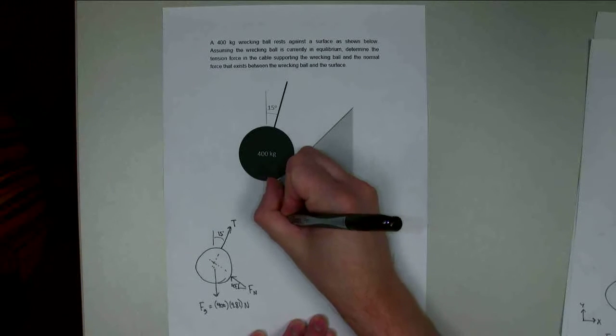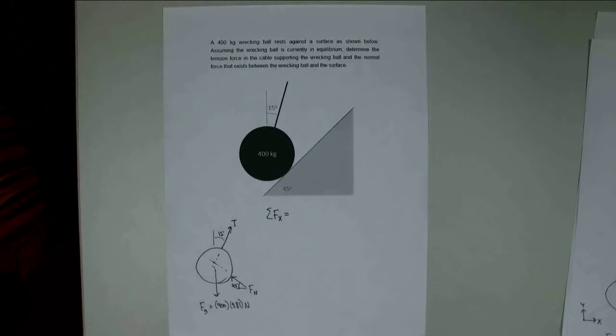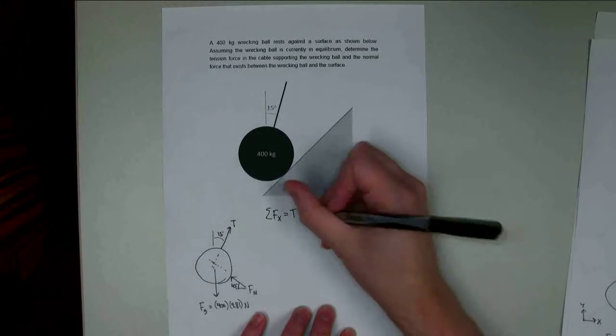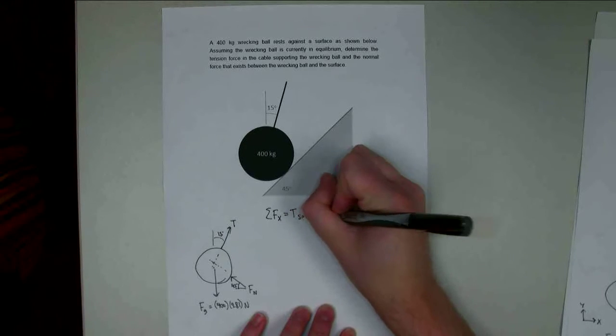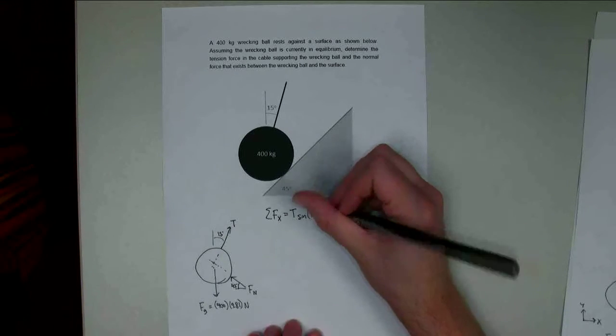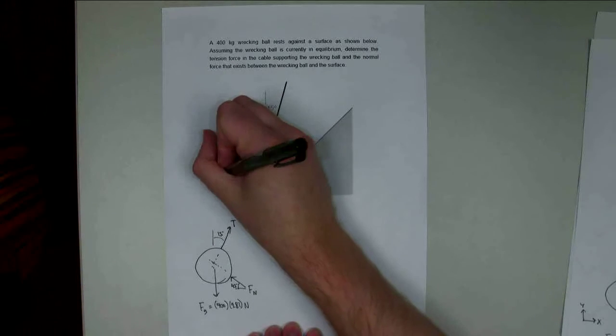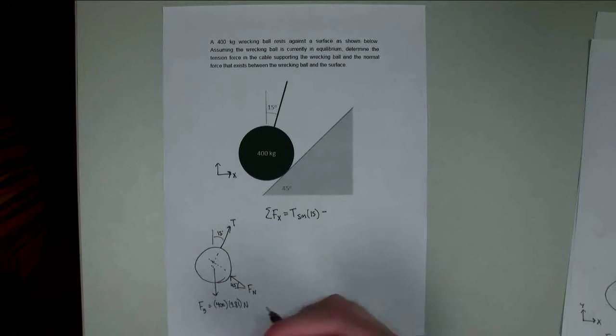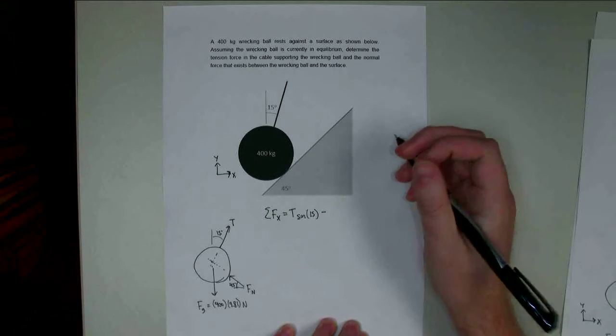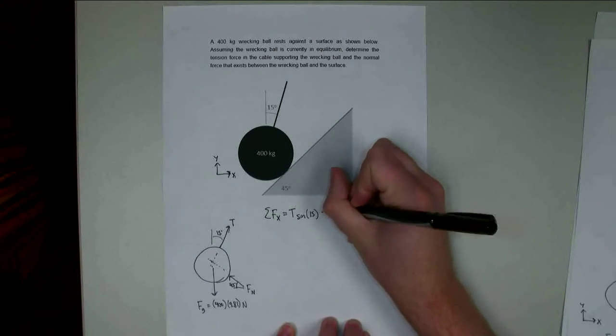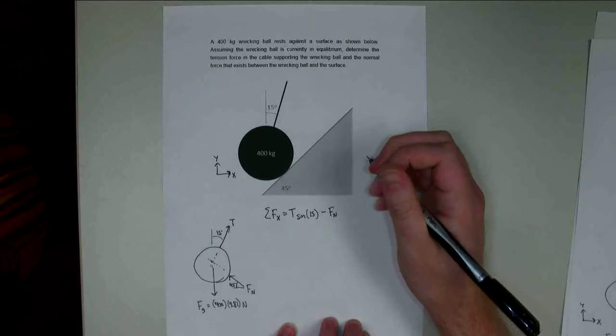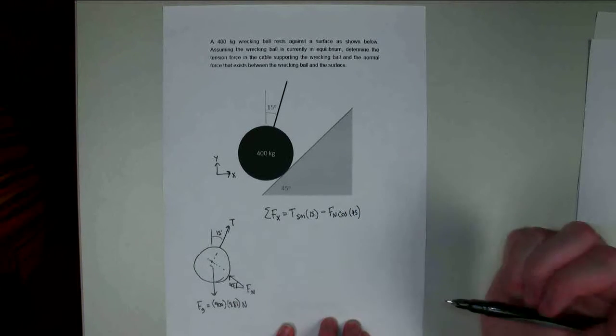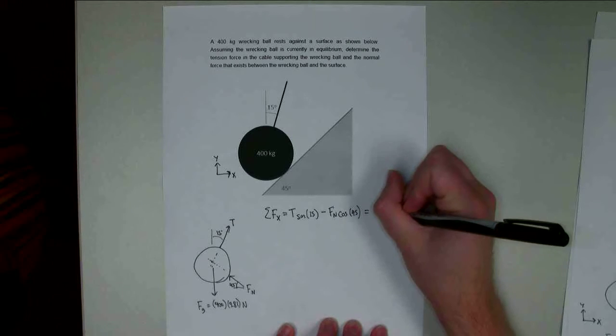If we look at sum of forces in the x, we need to find all the x components of our forces. That's going to be t times the sine of 15 - the opposite side of my triangle. And then the normal force is in the negative x direction, so I need to label my axes. That's negative Fn times the cosine of 45. The gravity force is all in the y direction, so there's nothing there. Sum of all those x components needs to equal zero.